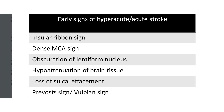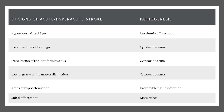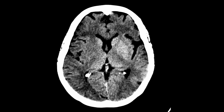Early CT signs of hyperacute or acute ischemic stroke include: insular ribbon sign, dense MCA sign, obscuration of lentiform nucleus, hypoattenuation of brain tissue, loss of sulcal effacement, and Provost sign or Vulpian sign. A hyperdense vessel sign is due to intraluminal thrombus. Loss of insular ribbon sign, obscuration of lentiform nucleus, and loss of gray-white matter distinction are due to cytotoxic edema. Areas of hypoattenuation represent irreversible infarction, and sulcal effacement is due to mass effect.